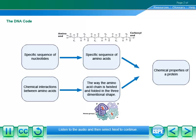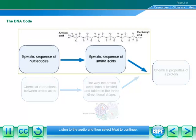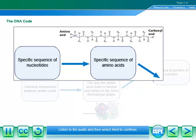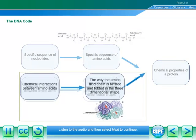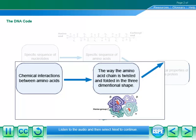The chemical properties of a protein are determined by two factors. The first factor is the protein-specific amino acid sequence, which is determined by the sequence of nucleotides. The second factor is the way in which the chain of amino acids is twisted and folded into a characteristic and complex three-dimensional shape.